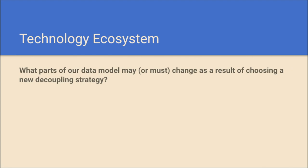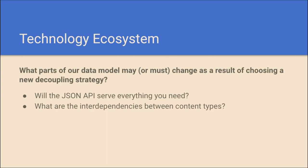What part of your data model might need to change? If you're using Drupal, is the JSON API really going to be able to serve all the content you need? Probably yes, but is it going to be in a way you can easily take advantage of? A lot of times there may be interdependencies between different types of content within Drupal, and you need to make sure that as you get your API structured, you're taking those interdependencies into account.